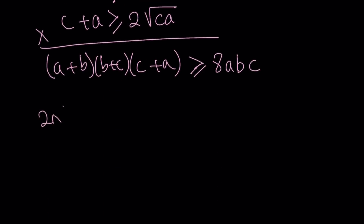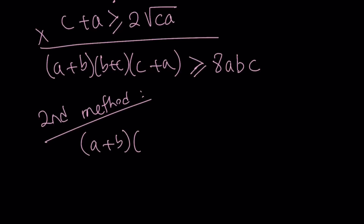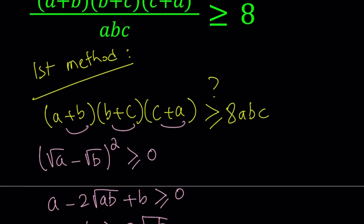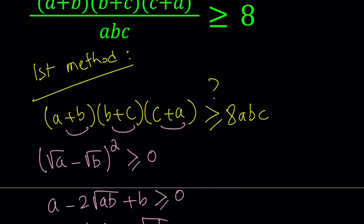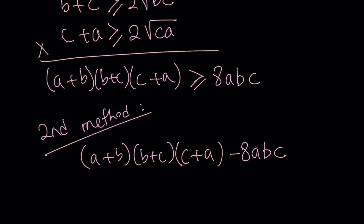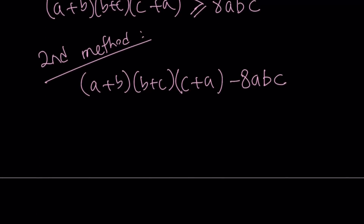Let's look at the second method. If you're trying to prove that something is greater than or equal to something else, you can put everything on the same side and use 0 on the right-hand side. So I'm going to prove that the difference is greater than or equal to 0 by manipulating this algebraically without assuming anything.